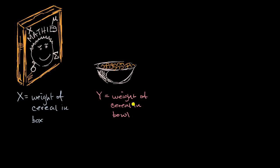So we've defined two random variables here. The first random variable, X, is the weight of the cereal in a random box of our favorite cereal, Mathies, a random closed box of our favorite cereal, Mathies.